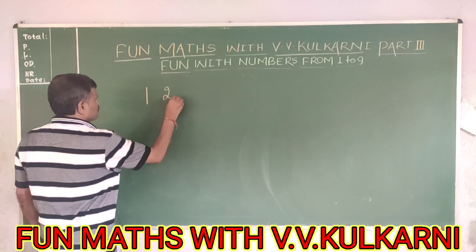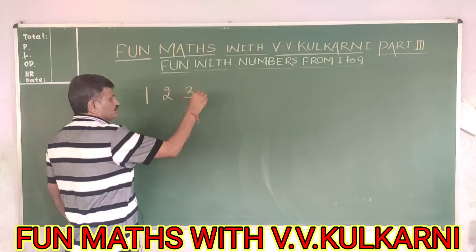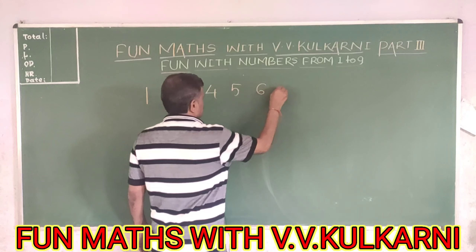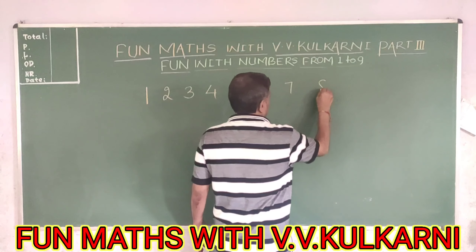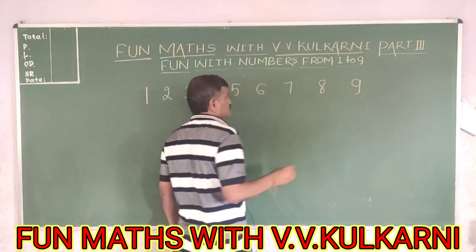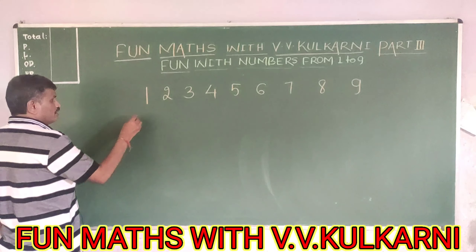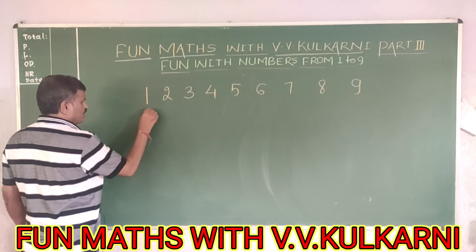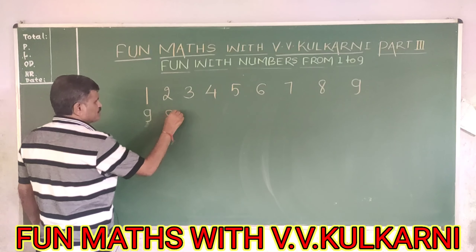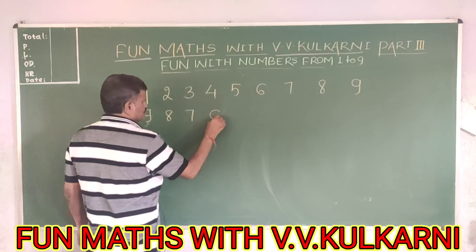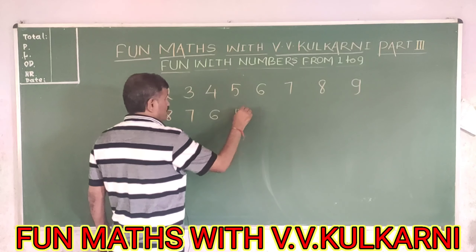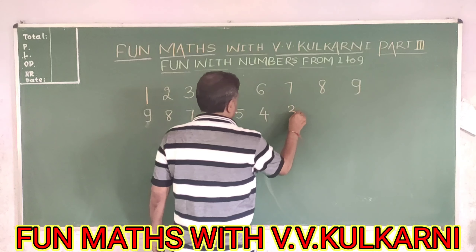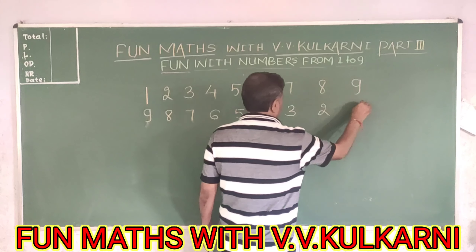Suppose I write the numbers 1, 2, 3, 4, 5, 6, 7, 8, 9. Again I will write it in reverse order — 9, 8, 7, 6, 5, 4, 3, 2, 1.